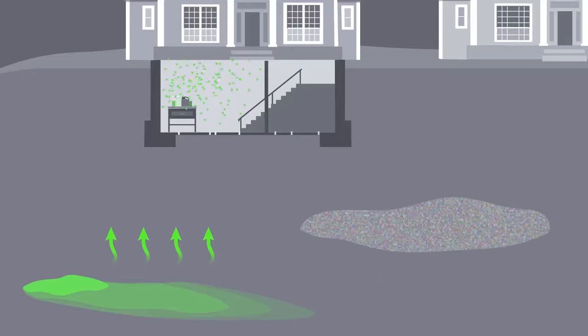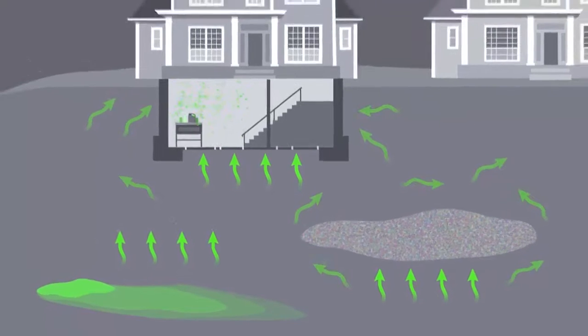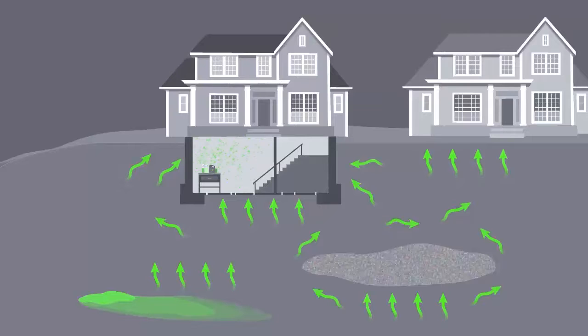TCE in contaminated soil or more likely contaminated groundwater can form a vapor that migrates through the soil into the home. This exposure route is known as vapor intrusion. Vapors can enter the home through cracks in the foundation, the sump pump, or through openings where utility lines enter the home.